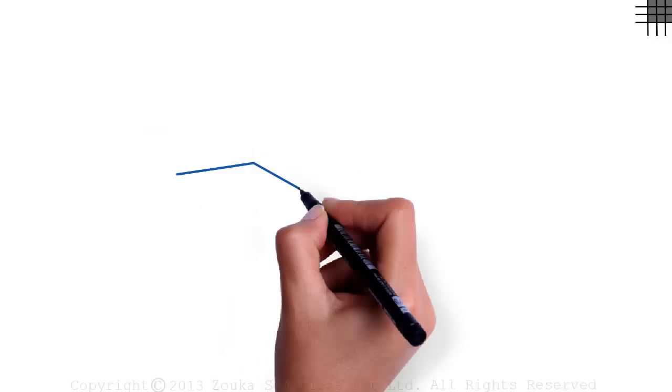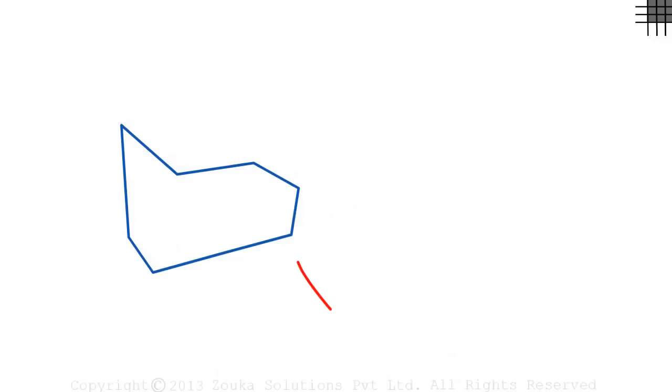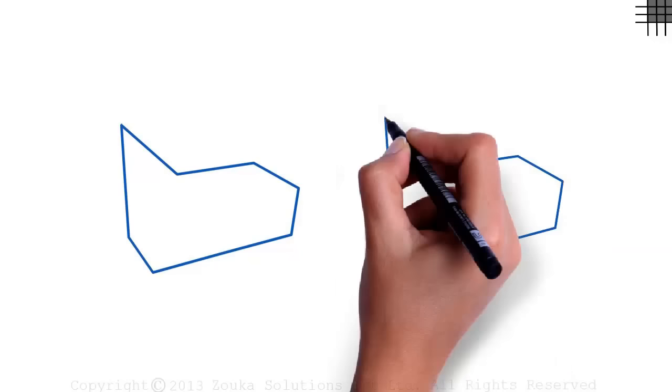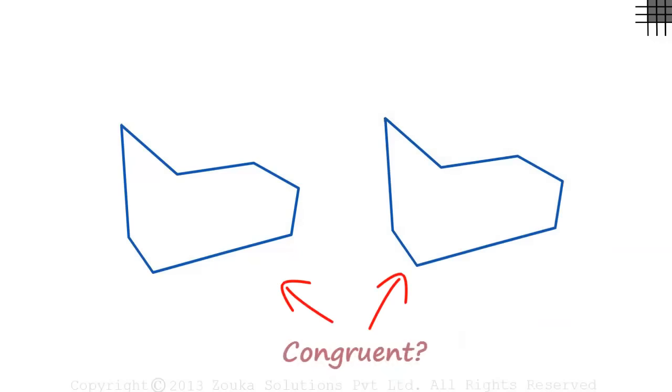Let me draw a random polygon. A polygon is a closed figure with three or more sides. And we have another polygon here. Are these two figures congruent?